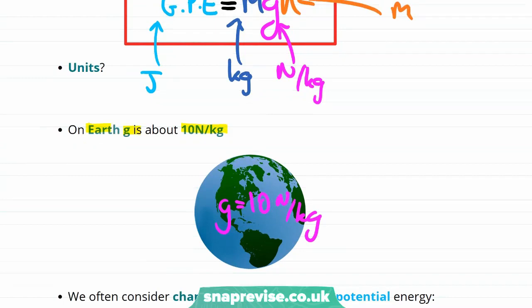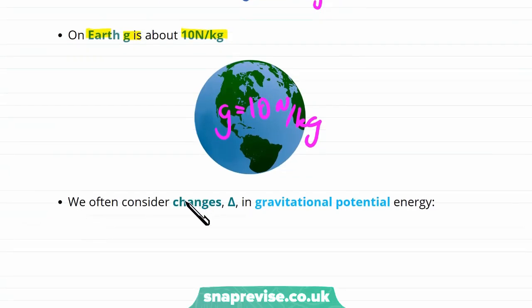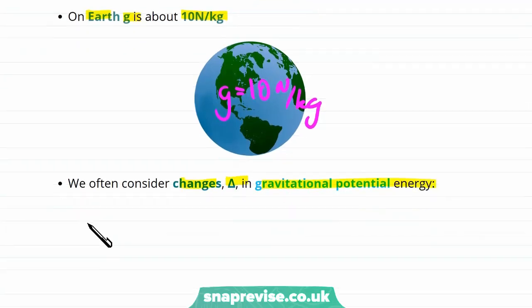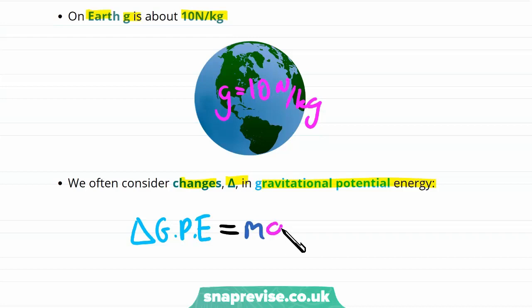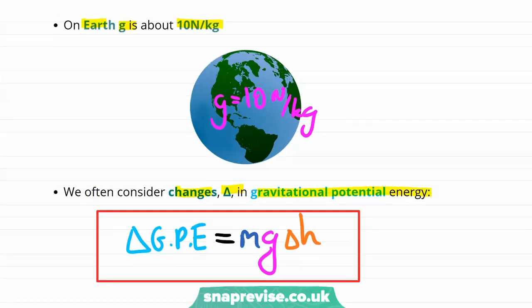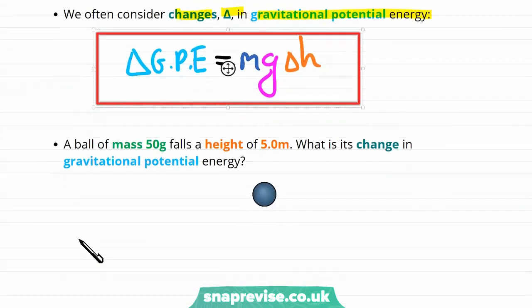Often we are interested not in the absolute value of the gravitational potential energy, but just the changes in gravitational potential energy, like when a mass is at two different heights. In this case, the change — given by the Greek letter delta — of the gravitational potential energy equals the mass, multiplied by the gravitational field strength, multiplied by the change in height.